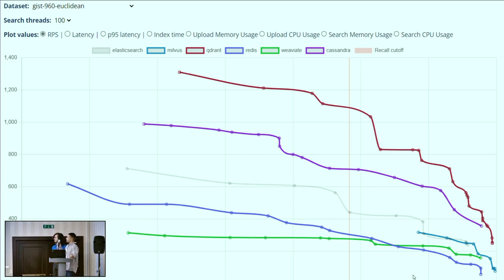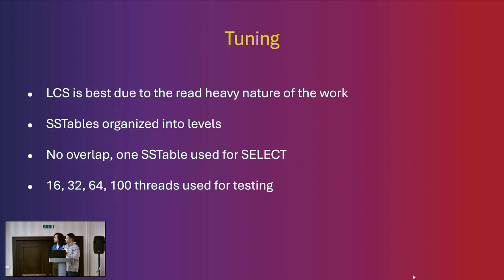Back to this graph — Cassandra is shown in purple — and we can see this reinforces that we hold high precision with high throughput, only being beaten by the Qdrant database. For tuning, we found that leveled compaction strategy is the best due to the read-heavy nature of the workload. As explained in a previous presentation, SS-tables are organized into levels, which guarantees we only read one SS-table when doing simple selects. Obviously the higher the number of threads, the more throughput we get, but that comes at a cost to latency.